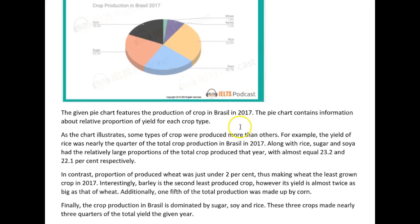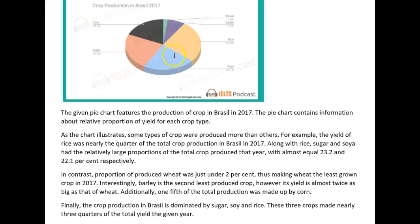Another thing really worth mentioning is that these three crops together made up almost three-quarters of the total crop production, and the remaining three made up just over 25%. You had six crops in total — three of them made up 75% and the other three just over 25%. I think that's worth mentioning. That's the kind of big picture comparison that examiners find interesting, rather than focusing so much on individual details.